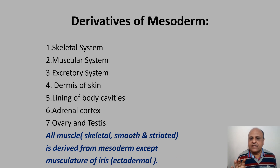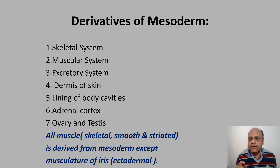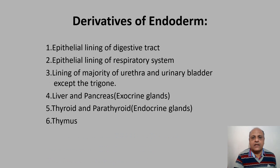So we covered the five derivatives of ectoderm, which included cornea and lens of the eye. Therefore the musculature of the iris is also derived from ectoderm. Now we come to the derivatives of endoderm.